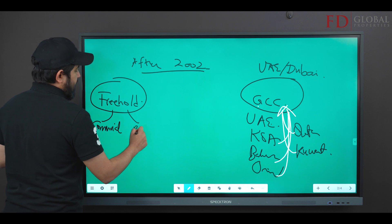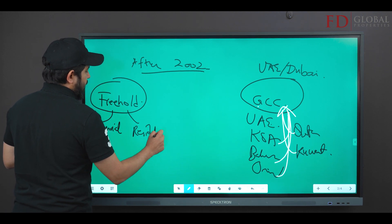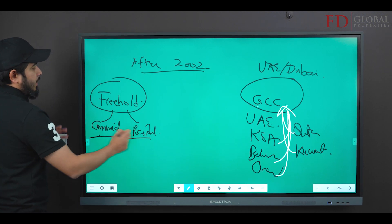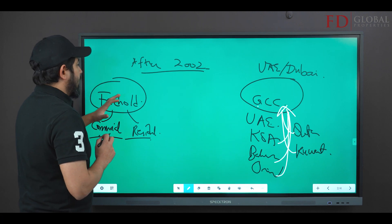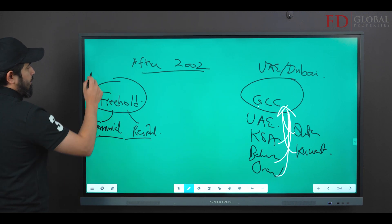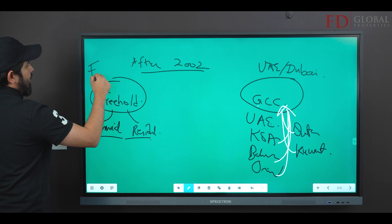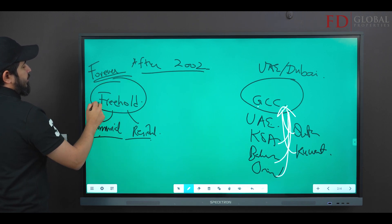Either of the two, it doesn't have to be one or the other. Freehold is ownership rights in perpetuity, forever. How do you remember what freehold is? F stands for freehold and F stands for forever.